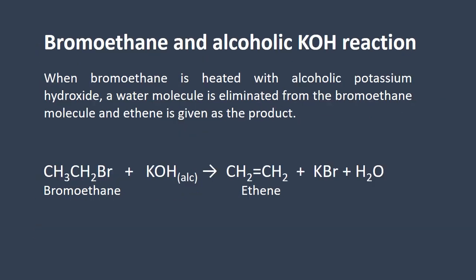Now we look at the bromoethane and alcoholic potassium hydroxide reaction. When bromoethane is heated with alcoholic potassium hydroxide, a water molecule is eliminated from the bromoethane molecule and ethene is given as the product.